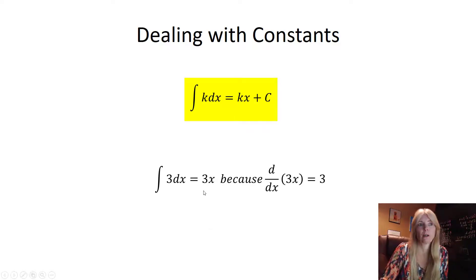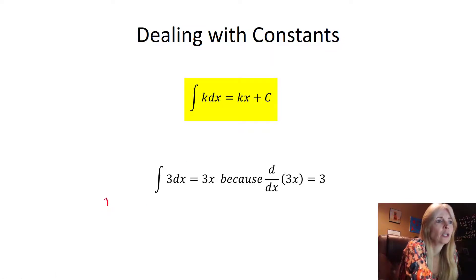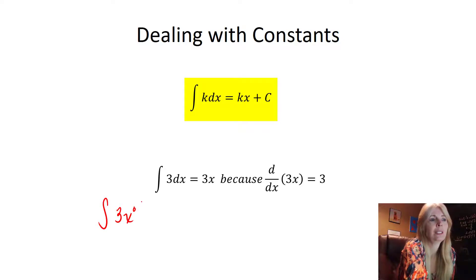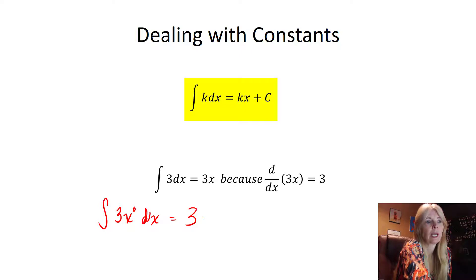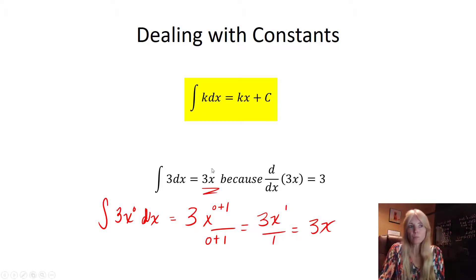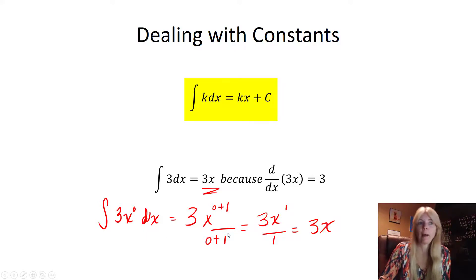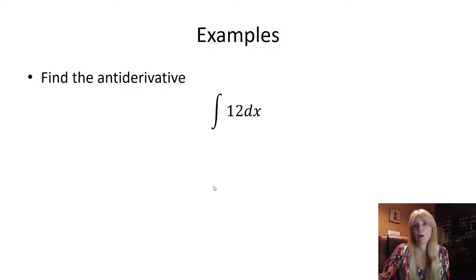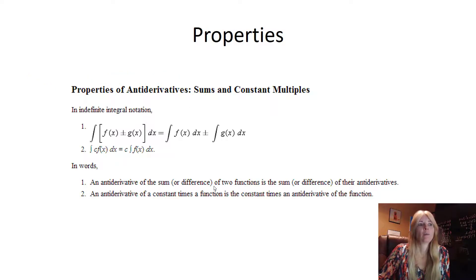We can think of the constant 3 as 3x⁰, since anything to the 0 power is 1. Applying the rule: add 1 to get x¹, divide by 1, giving simply 3x. Similarly, the antiderivative of 12 dx is 12x + C. These are similar shortcuts to what we did with derivatives — you just recognize that you add the variable.